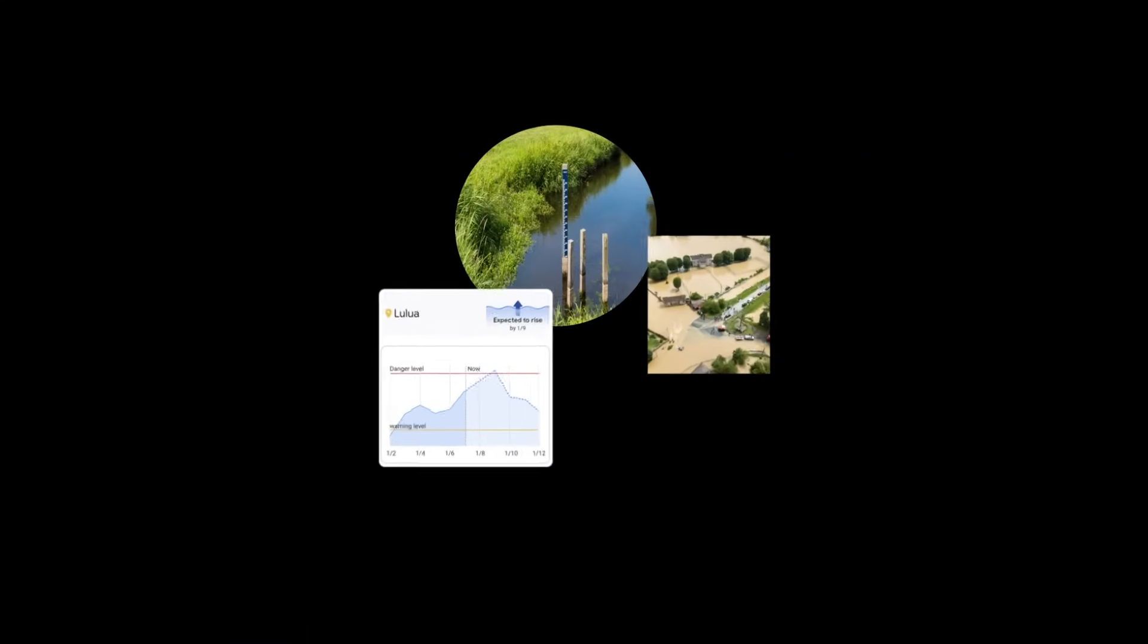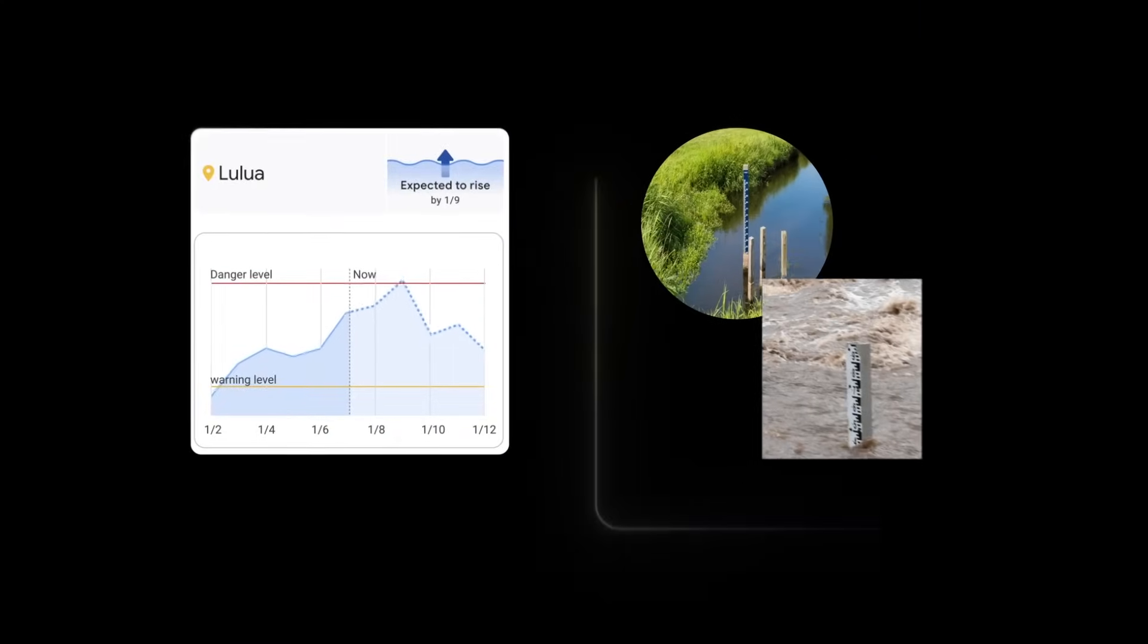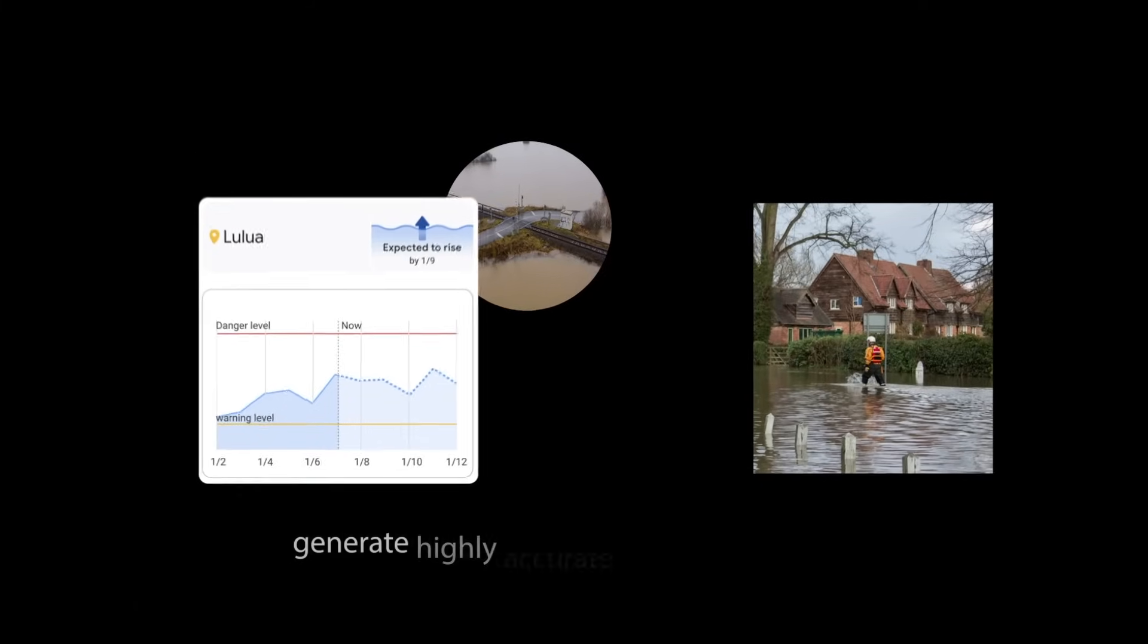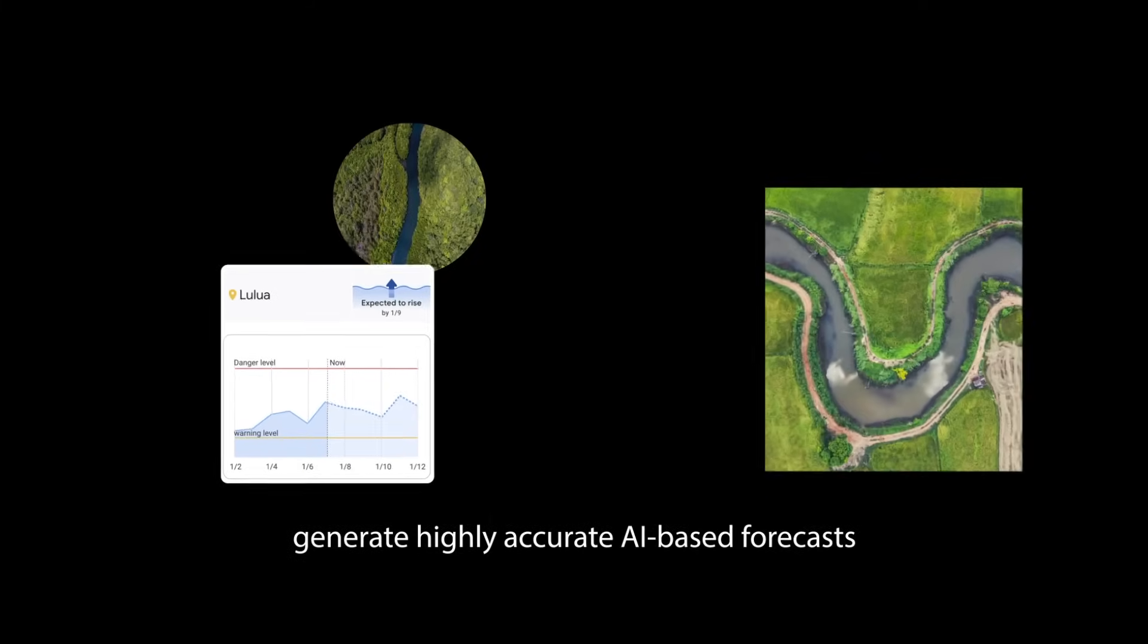The model is trained on global data, allowing it to learn general hydrologic behaviors and generate highly accurate AI-based forecasts, even in river basins that lack streamflow gauges.